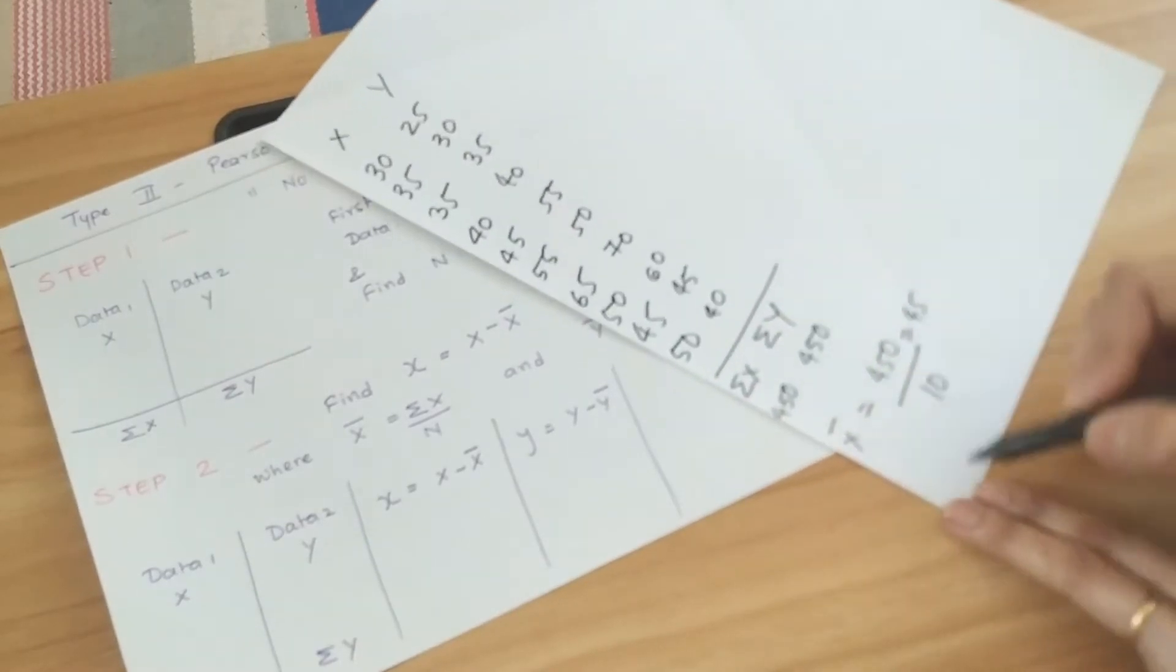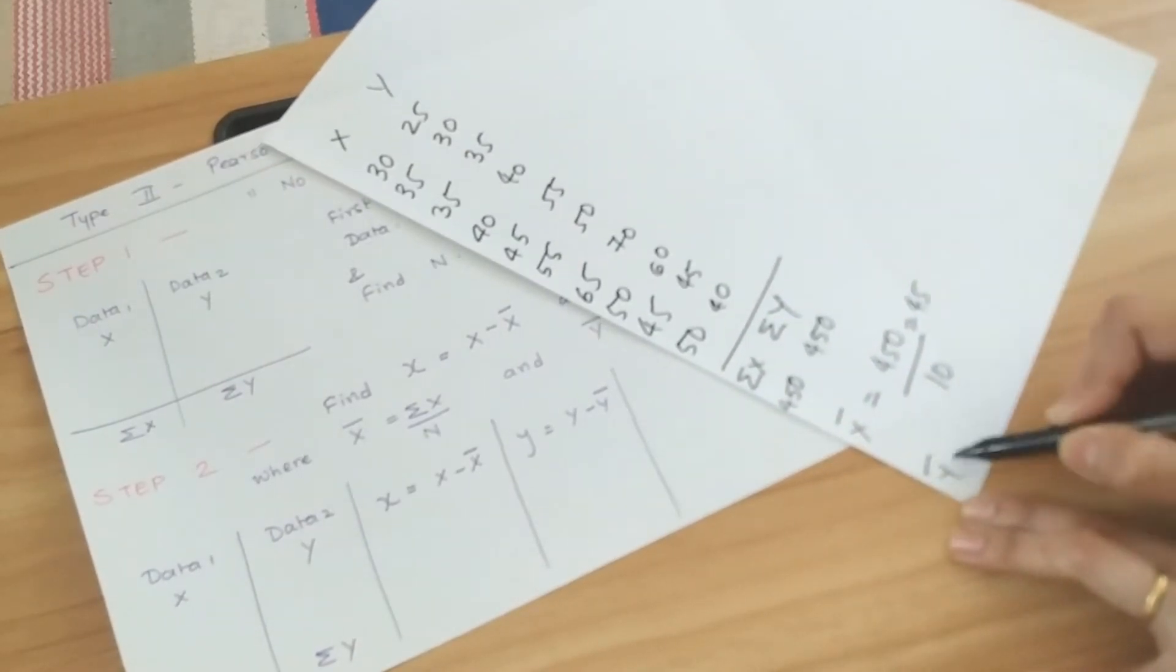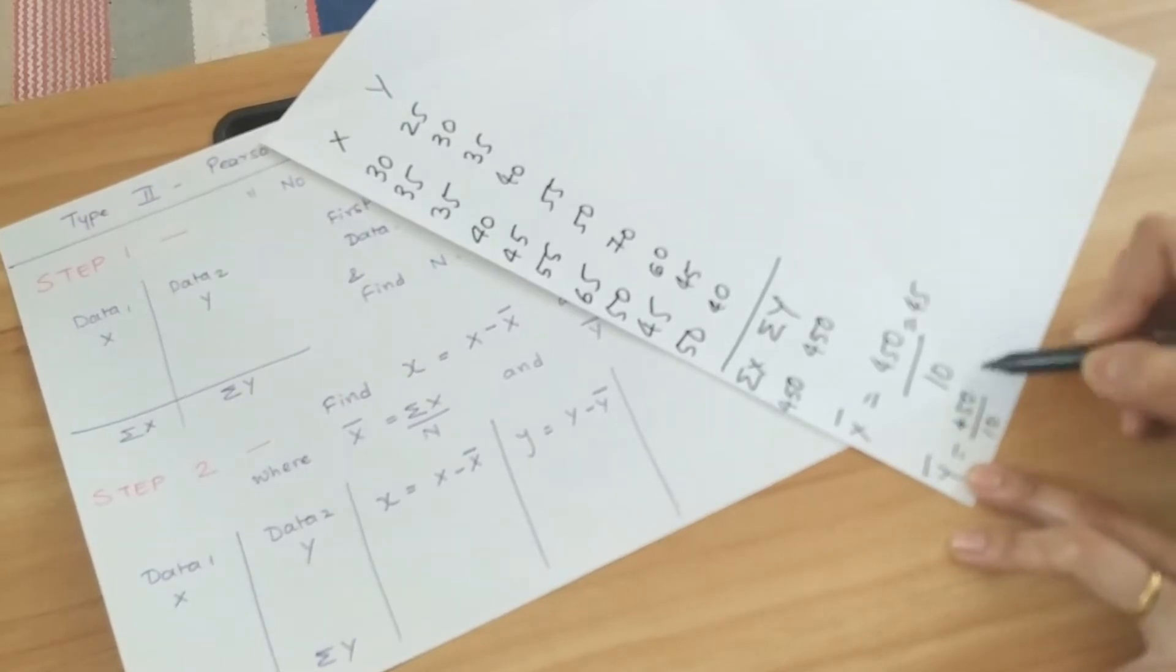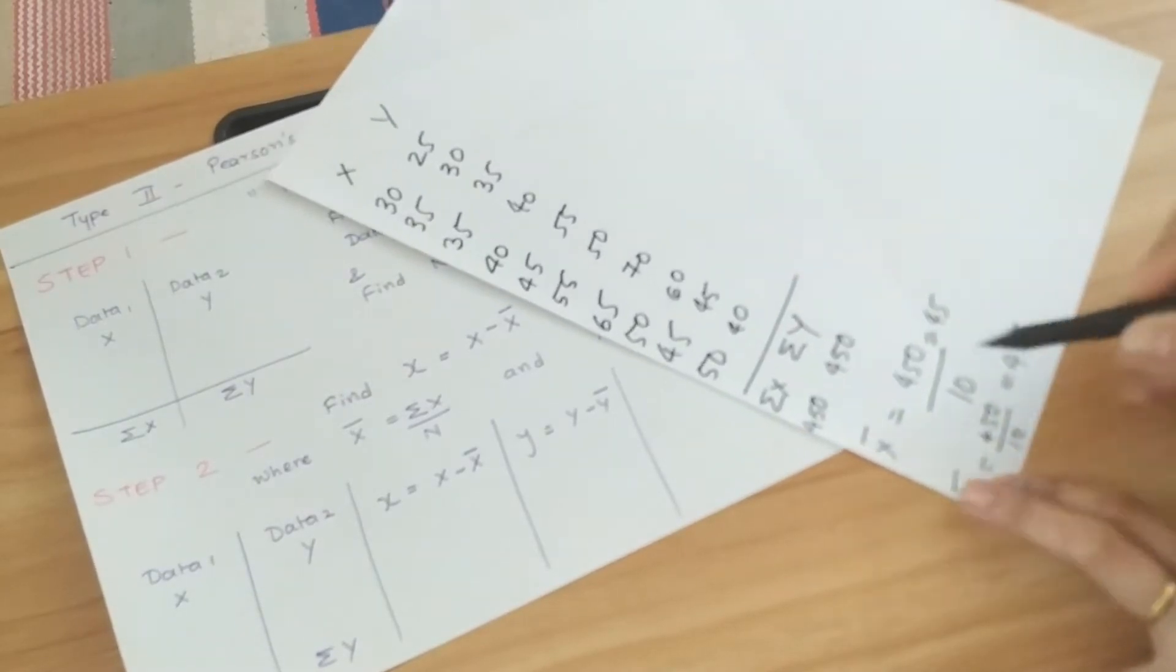Your x bar is 45 and similarly y bar is also the same. 450 by 10 is 45. So you have got the x bar and y bar values.